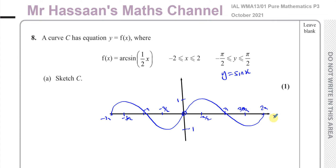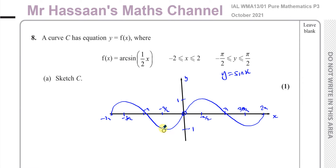If we were to draw the inverse of this, the x and y swap around. But it will not be a function, because sine is a many-to-one function — many x values lead to one y value. If you draw the inverse of a many-to-one function, it becomes one-to-many, which is not a function. So for this to be a function, you have to restrict the domain so it is one-to-one. They restrict it between minus pi over 2 and pi over 2, getting rid of all other parts. Then the inverse will also be one-to-one.